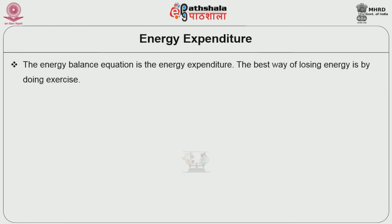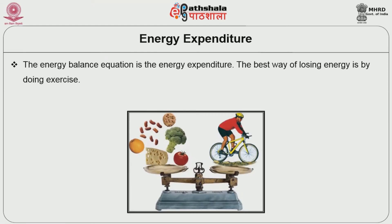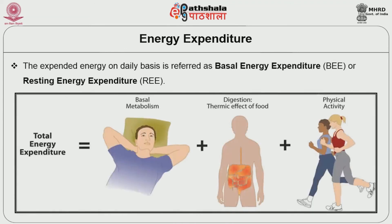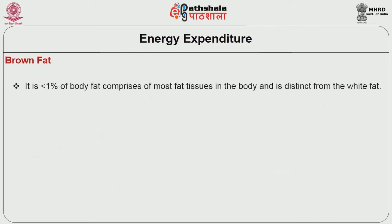The other side of the energy balance equation is energy expenditure. The best way of losing energy is by doing exercise. The majority of energy is spent for carrying out the basic metabolic reactions of the body. The expended energy on a daily basis is referred to as basal energy expenditure or resting energy expenditure. This basal energy expenditure is involved in the regulation of body weight through several mechanisms, such as brown fat.